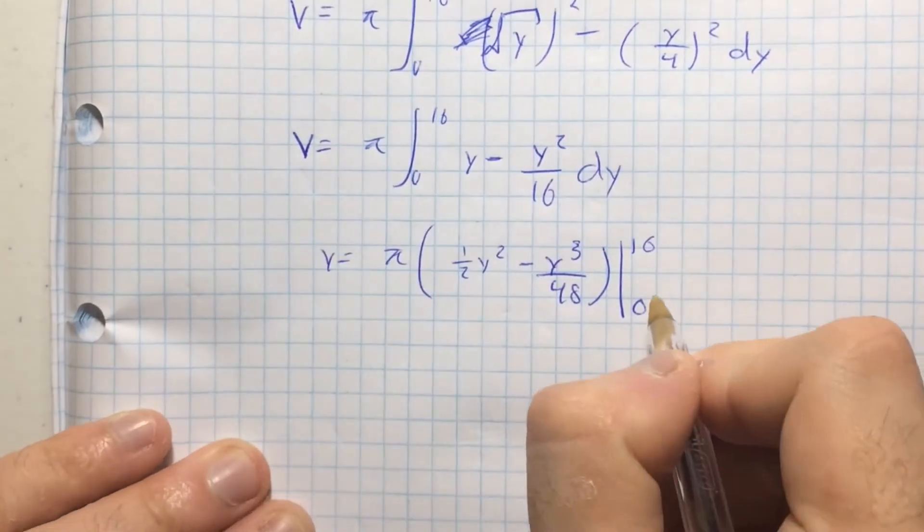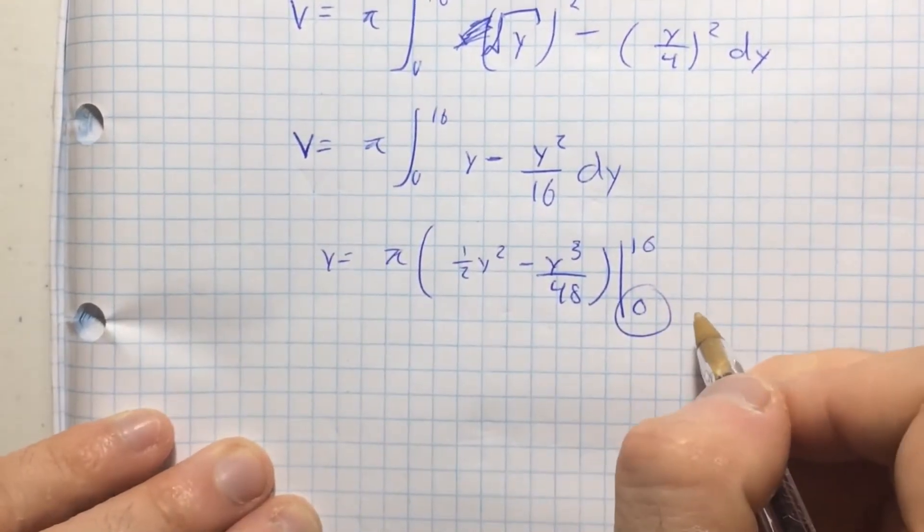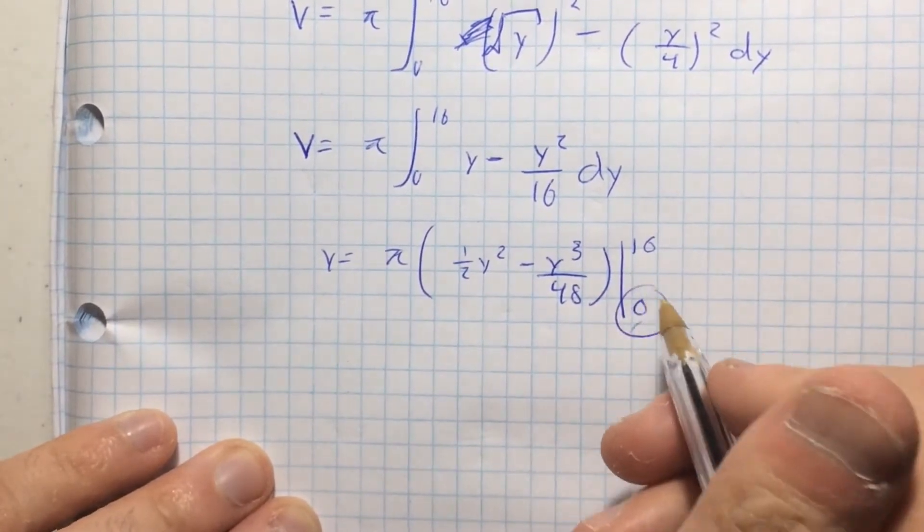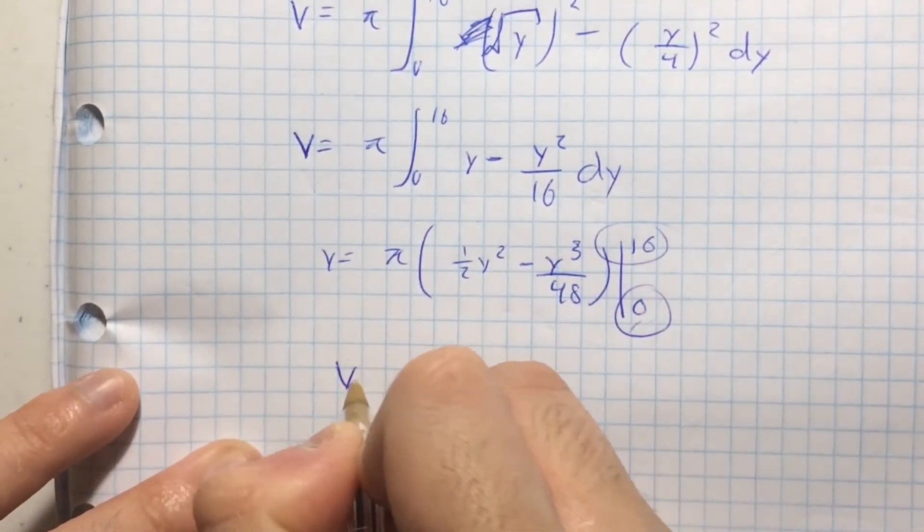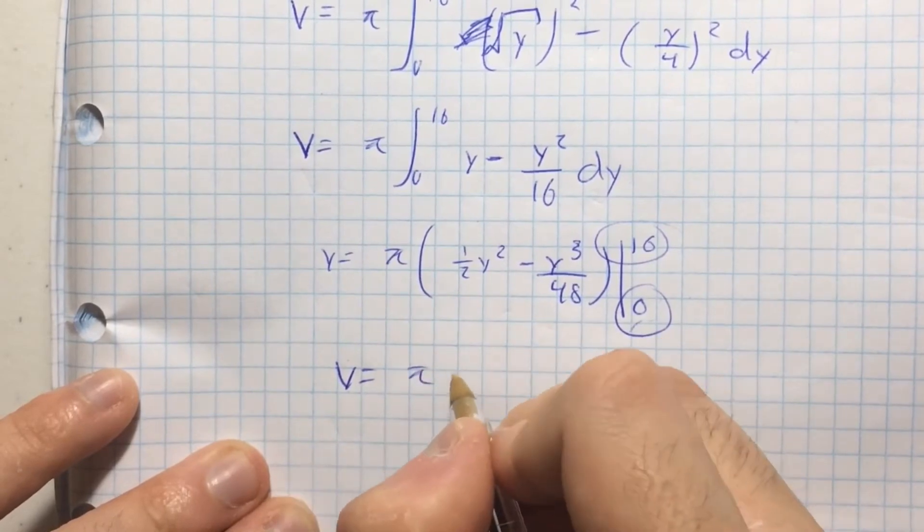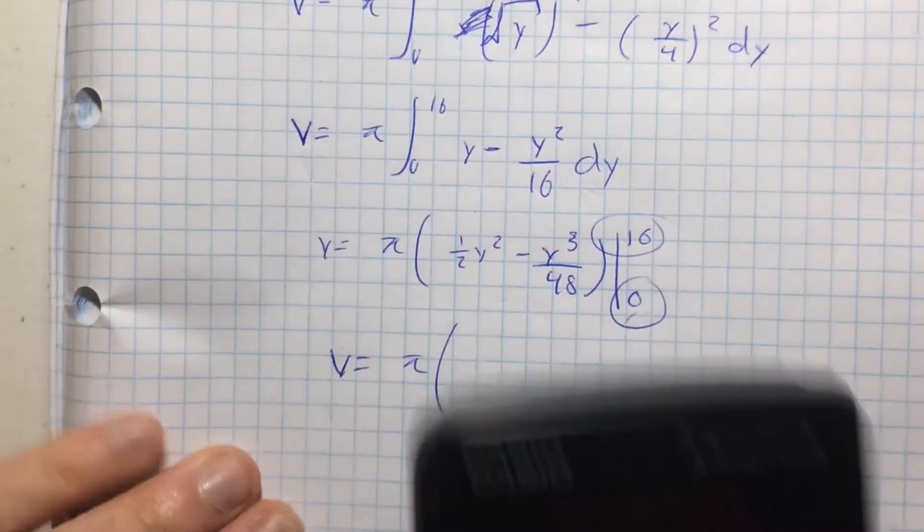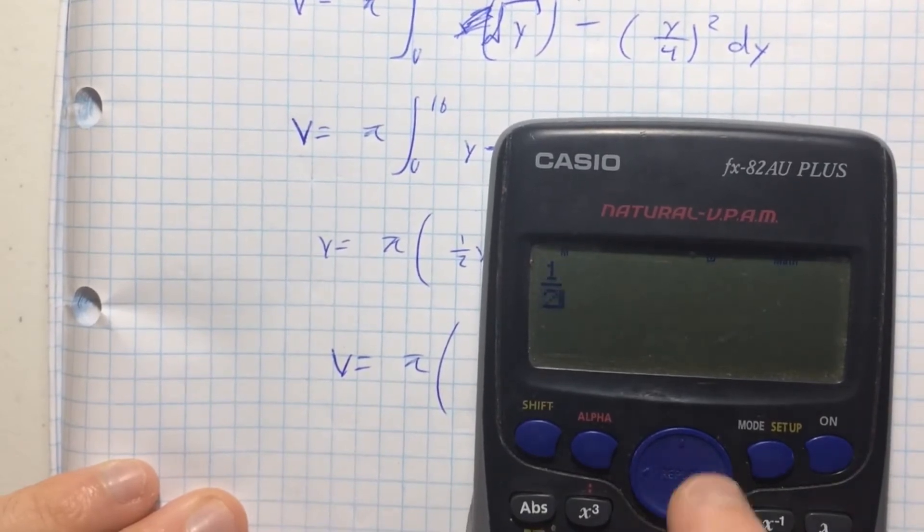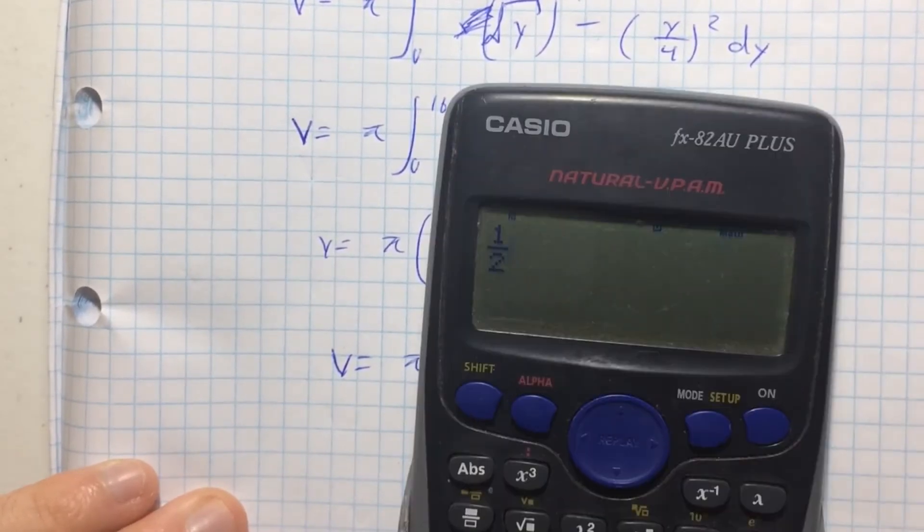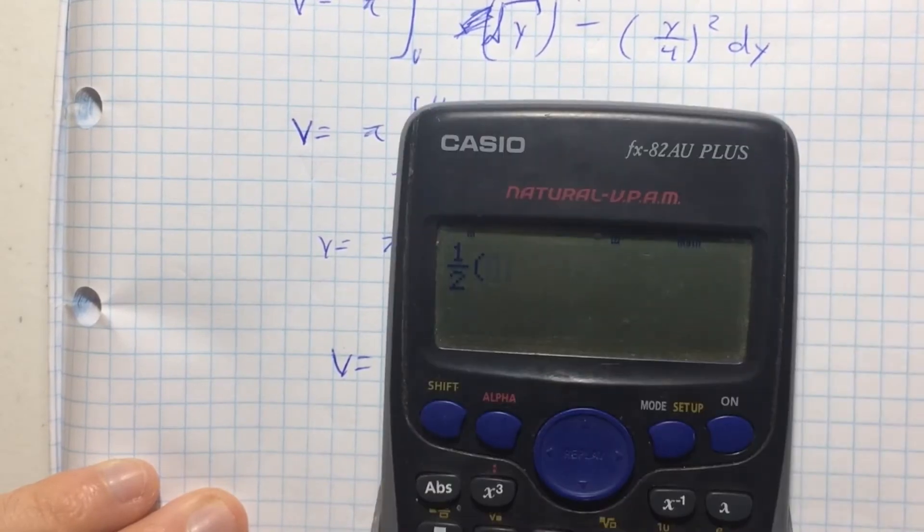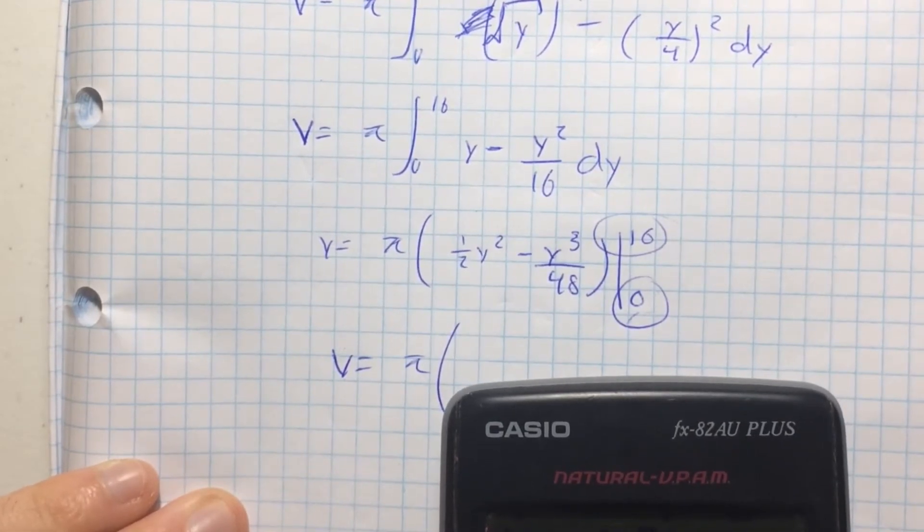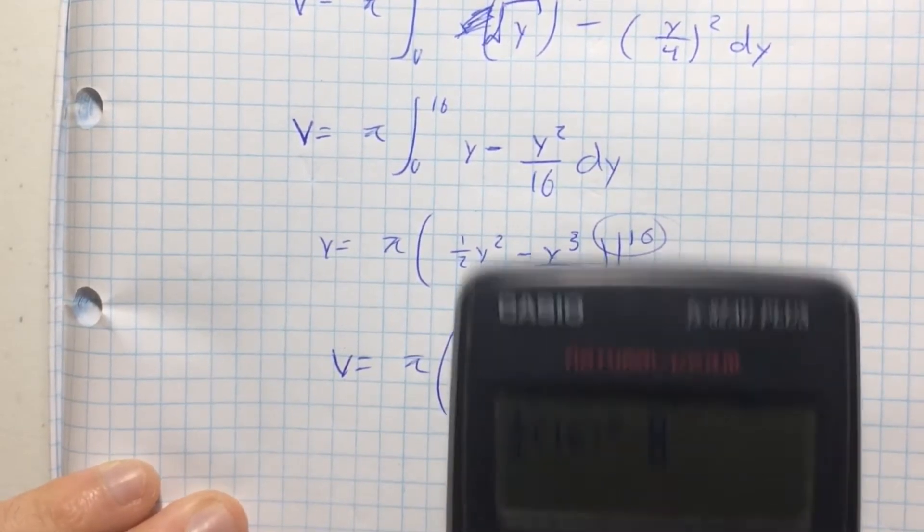That's annoying, but thank gosh there's 0 here because now I can literally disregard the second half of the equation and just plug in 16 and solve for the volume. So the volume is equal to pi. Now let's get my trusty calculator out again. So 1 over 2, 16 squared, I believe that's 256. Y cubed over 48.